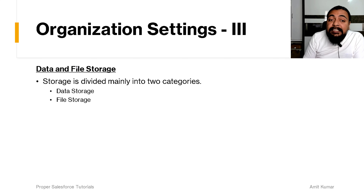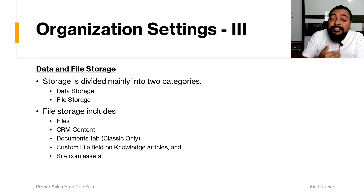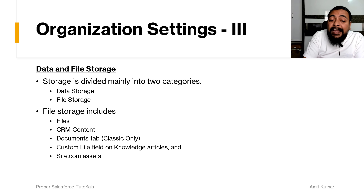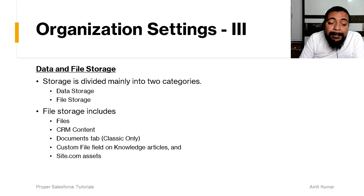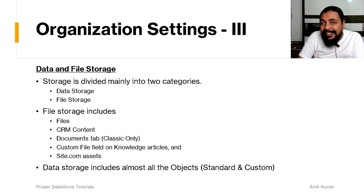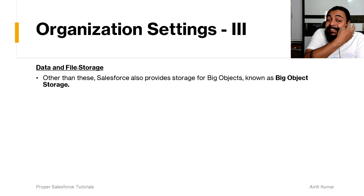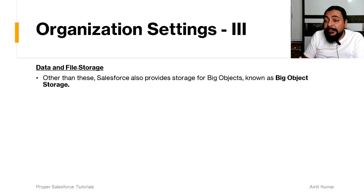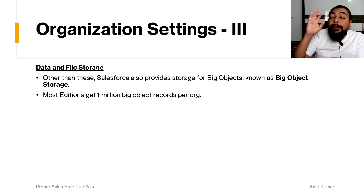Now let's talk about data and file storage. Storage is divided mainly into two categories: data storage and file storage. File storage includes files, CRM content, documents, the Documents tab, custom file fields on knowledge articles, and Site.com assets. Data storage includes almost all objects, whether standard or custom.